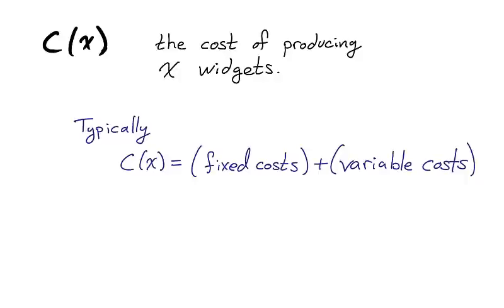Fixed costs are independent of the number of widgets produced, such as administrative salaries and storage and factory rentals. While variable costs are dependent upon x, the number of widgets produced.